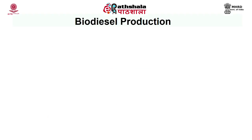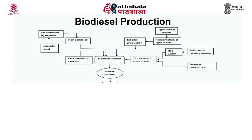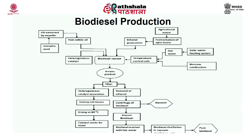A flowchart shows the biodiesel production process using renewable resources. Oil extraction happens mainly by expeller — seeds are fed into the expeller and oil is removed. This oil is used in the biodiesel reactor. The product undergoes heterogeneous or homogeneous catalyst separation, followed by washing, drying, and catalyst reuse. Excess ethanol is removed, biodiesel forms in the upper phase and is separated by centrifugation, glycerol is separated, and the impure biodiesel is distilled in a vacuum distillation unit to obtain pure biodiesel.